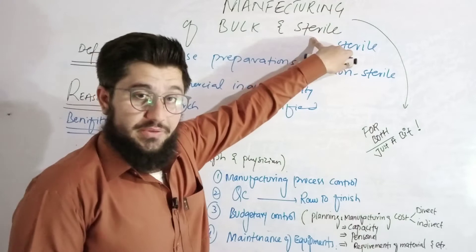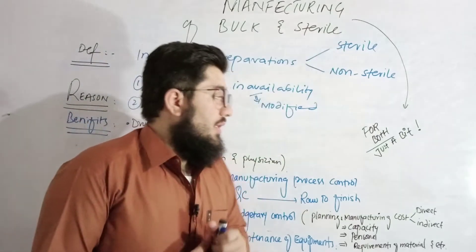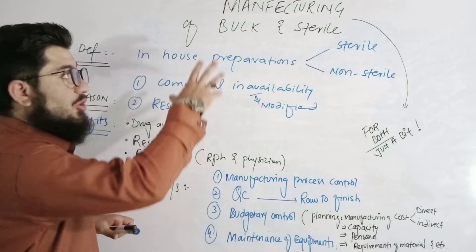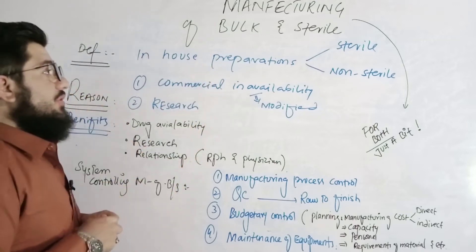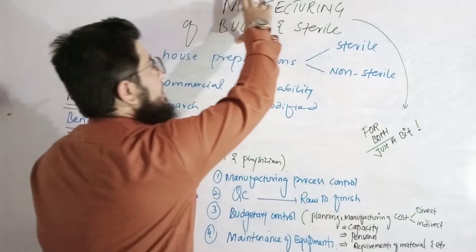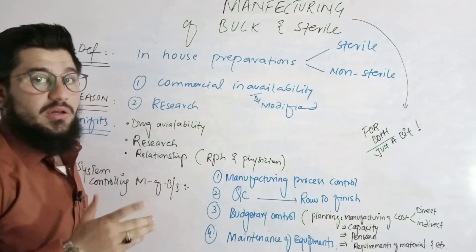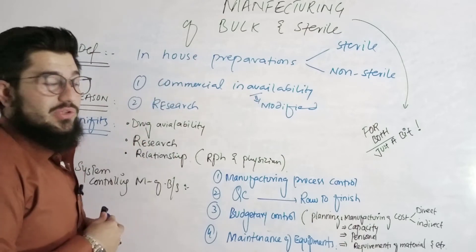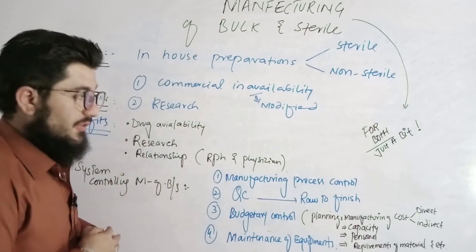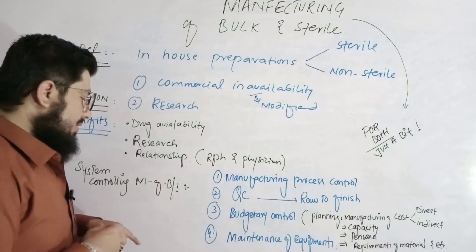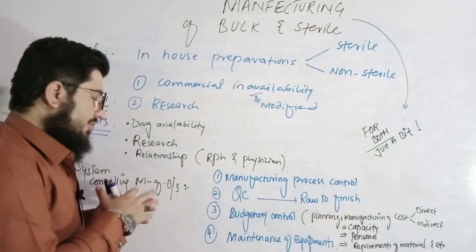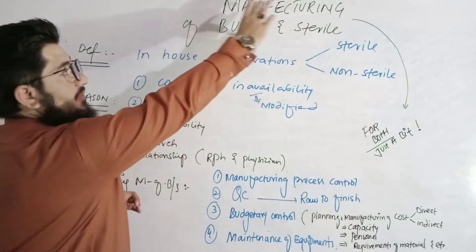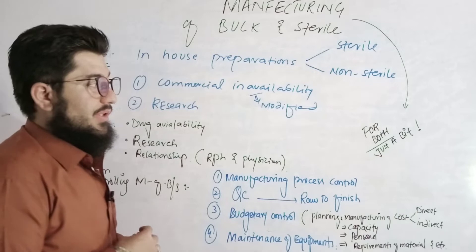Today's topic is manufacturing of bulk and sterile. These are the points that will help us understand this topic in a simple way. Point number one is definition — what the title actually means. Then we'll talk about the reasons for manufacturing of bulk and sterile, the benefits, and then the system of controlling manufacturing of bulk and sterile.